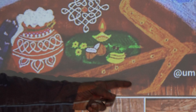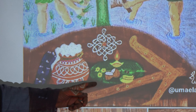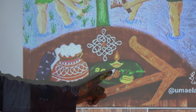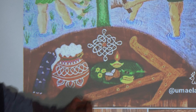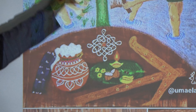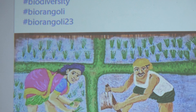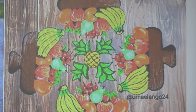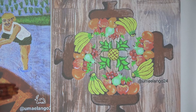Here the biodiversity elements include a banana leaf, coconut, and a broken coconut. You can see lots of elements — lots of paddy and vegetables. In the next image you can see it's like a dining table setting.